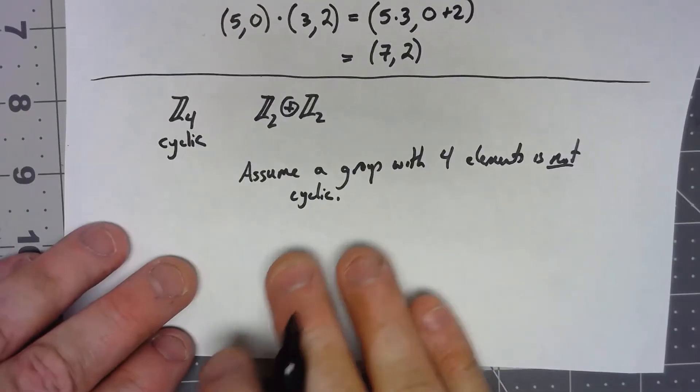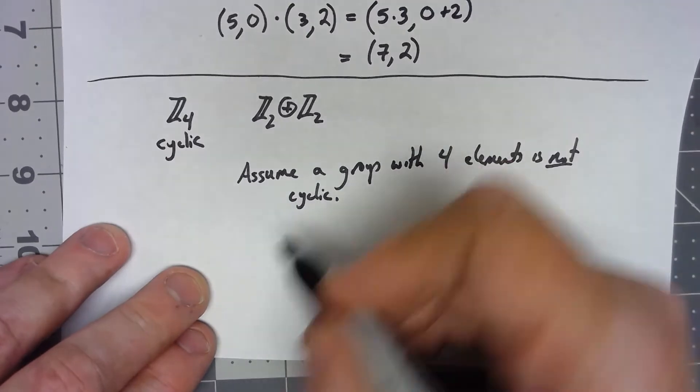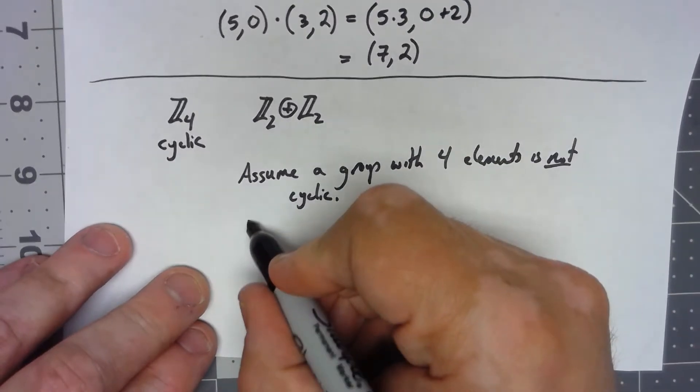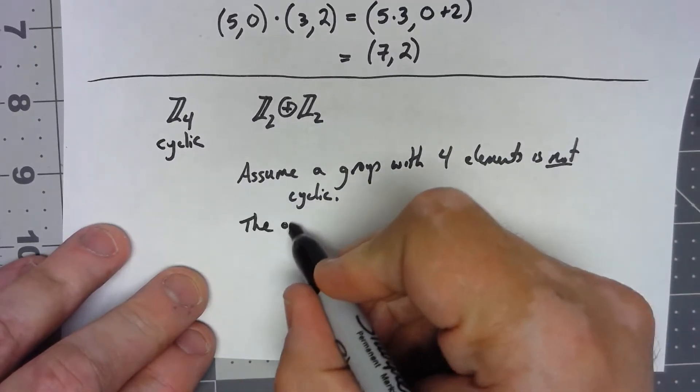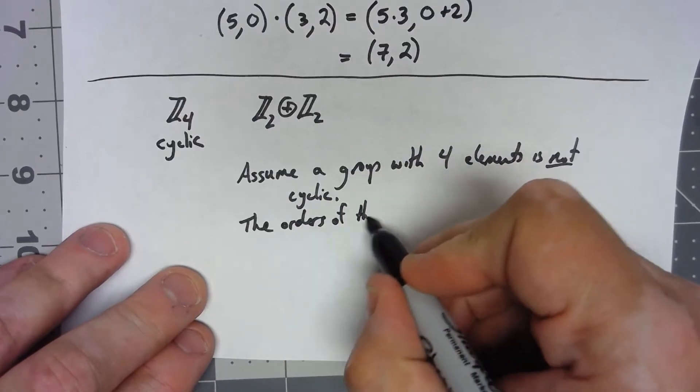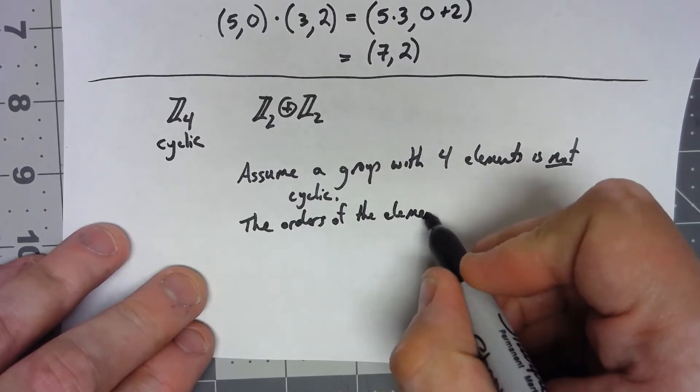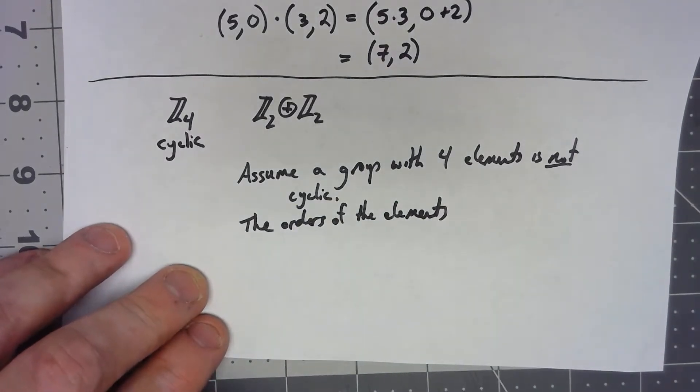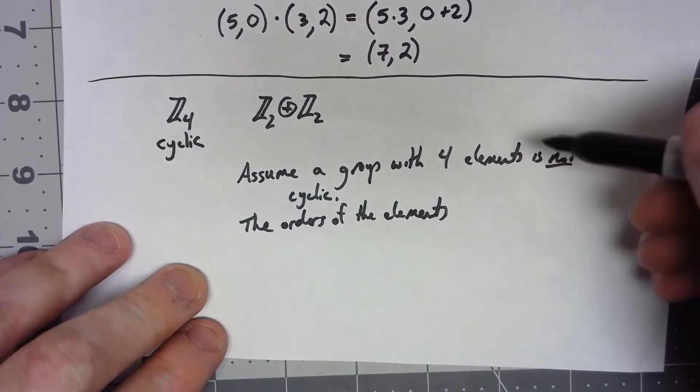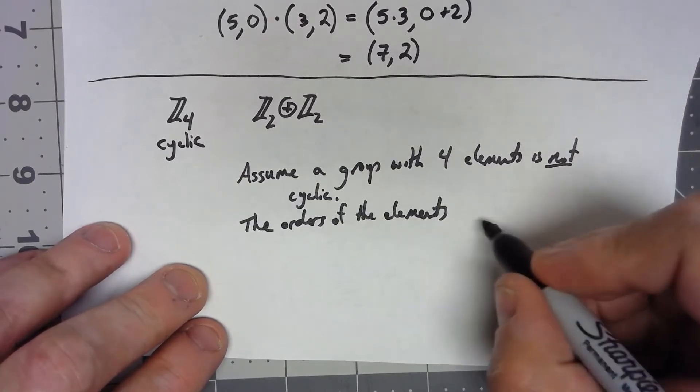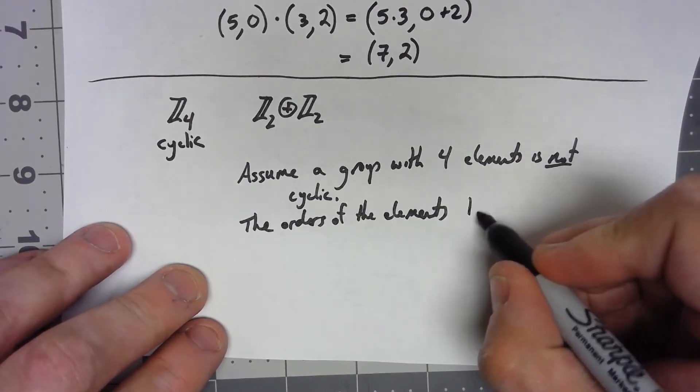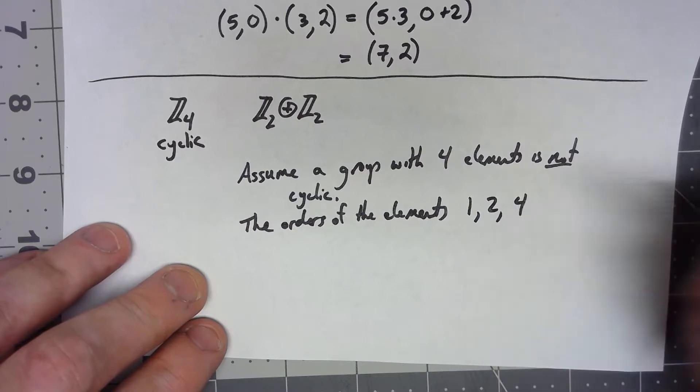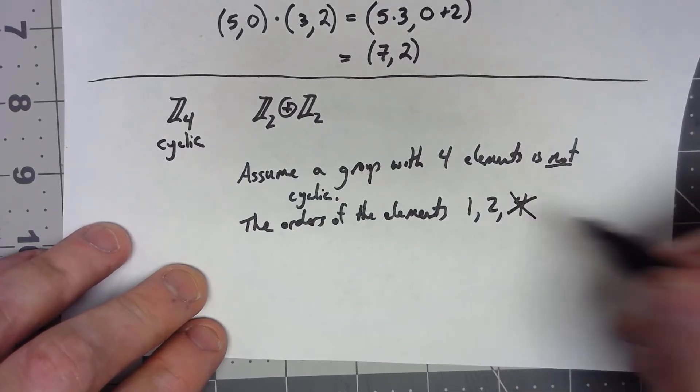Let's think about the orders of the elements. The order of any group element must divide the order of the group. So since the order of the group is four, the only possibility of the elements are one, two, and four. But we throw out four because if we had an element that was order four, it would be a cyclic group.